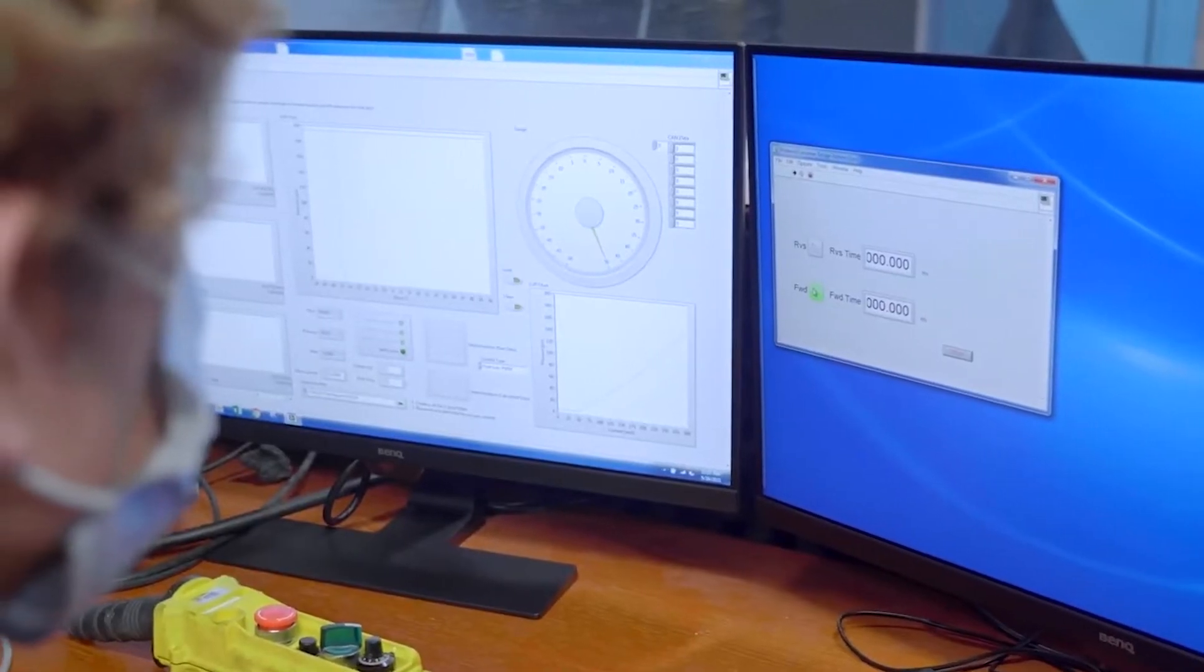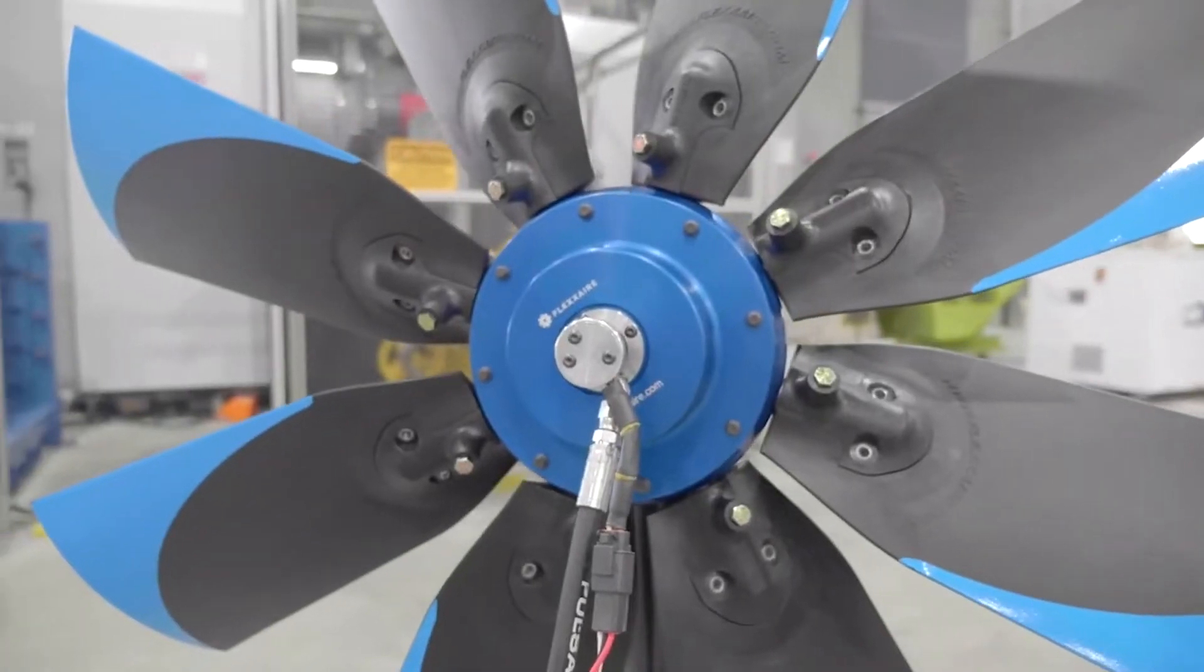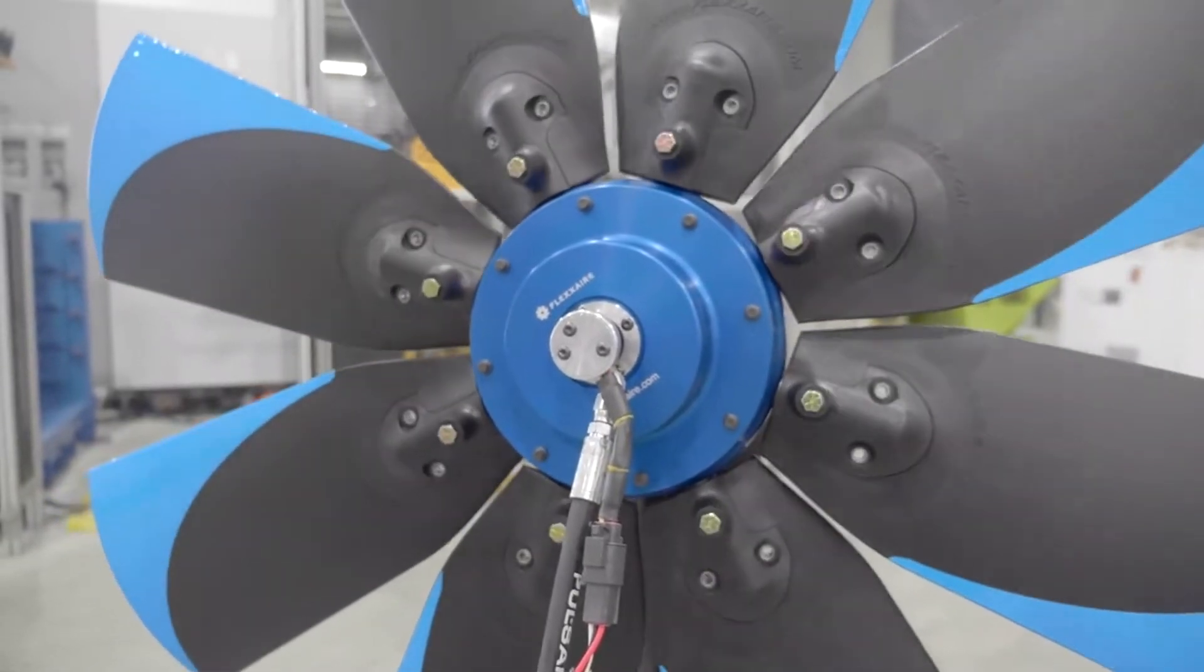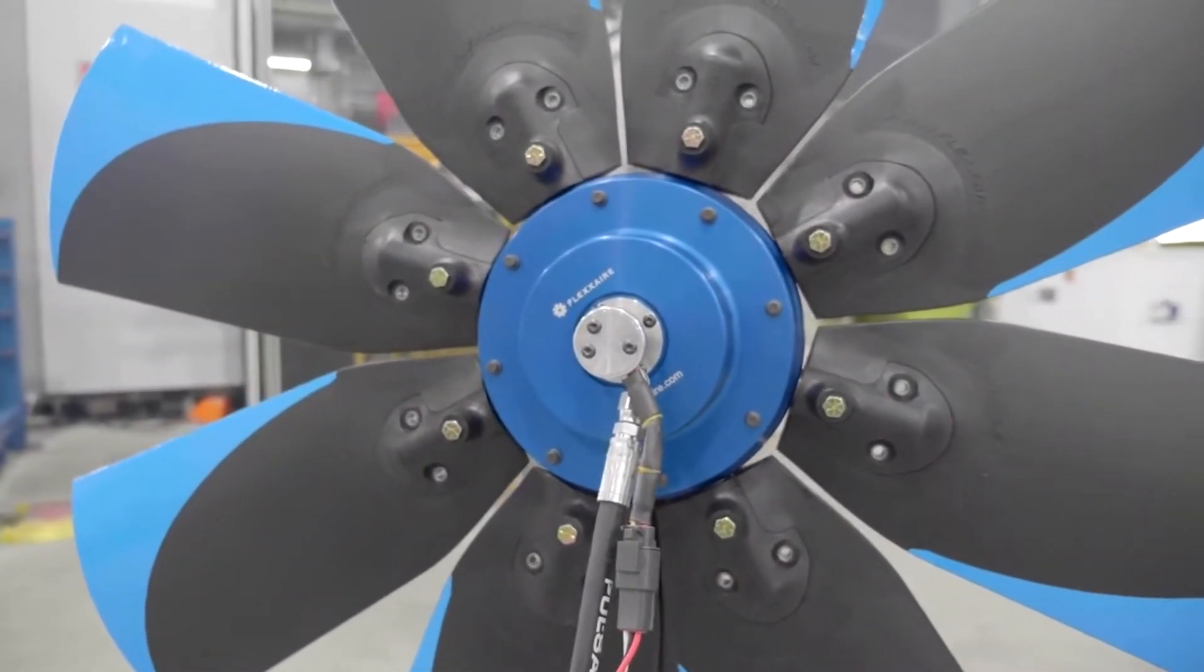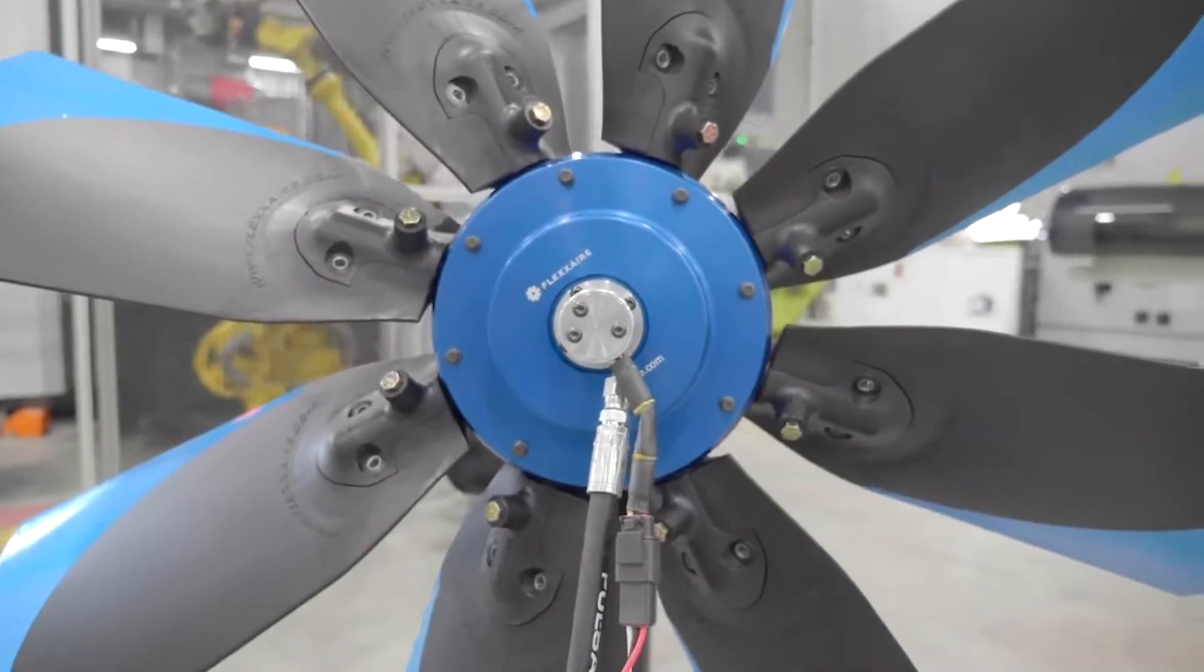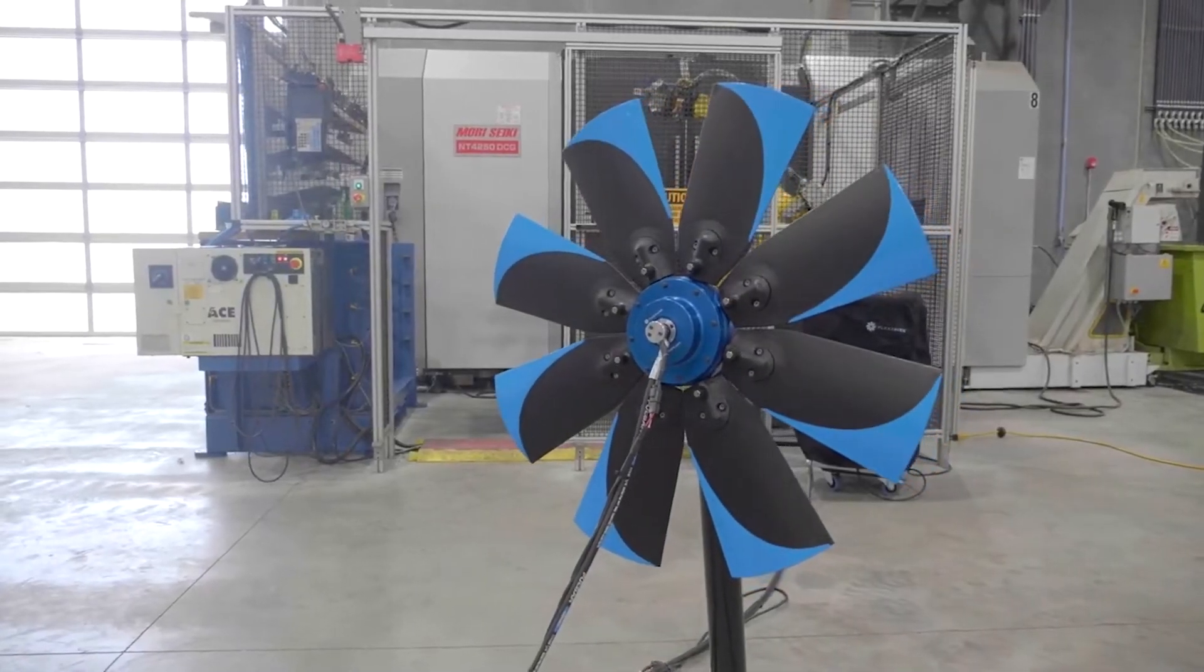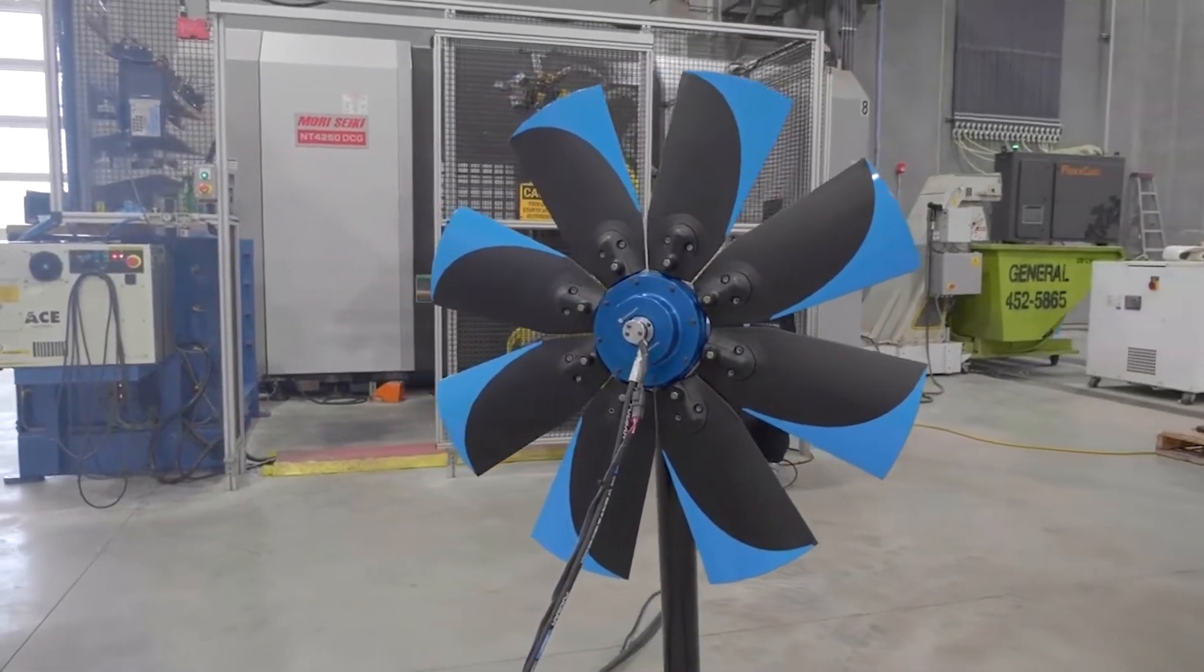As we reverse the pitch, the width of the blade envelope is reduced, meaning the widest the fan will be is in the full pitch position. During reverse and neutral cycles, there is a reduction in horsepower draw and sound level.